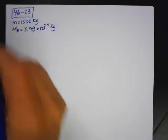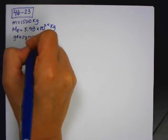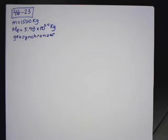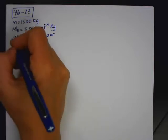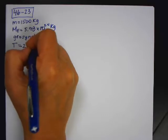They also tell us that this is a geosynchronous satellite. So a geosynchronous satellite matches the period of Earth's rotation. So that means that T is equal to 24 hours.